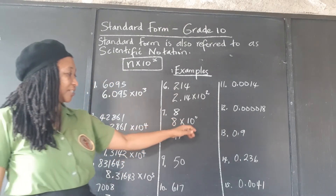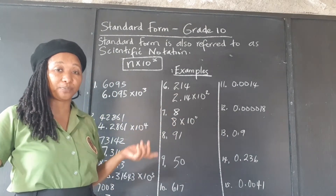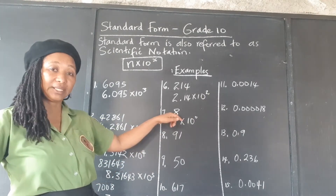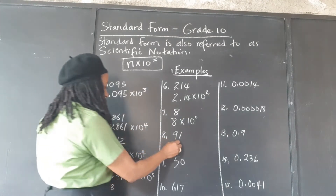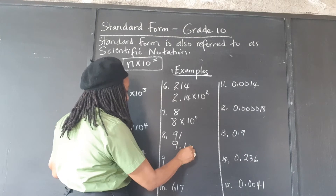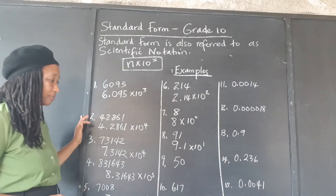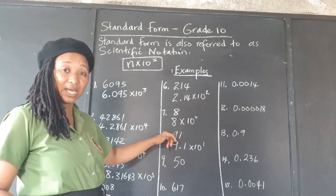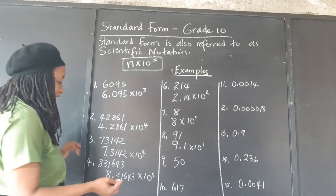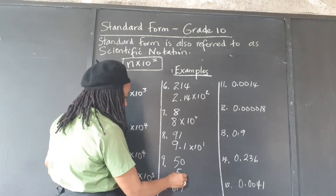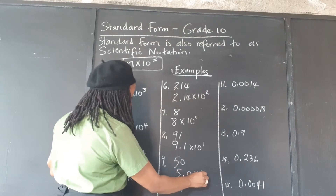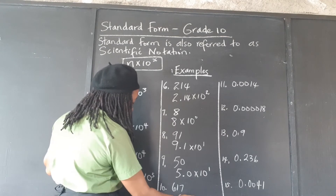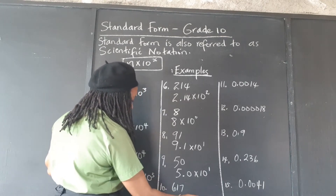And 8 would be 8 times 10 to the 0 power. Because remember, 10 to the 0 power is 1 — any number to the power of 0 is 1 — so this is 8 times 1. 91 is 9.1 times 10 to the first power; we'd have to move one place to the right for this to become 91 again. 50 would be 5.0 times 10 to the first power. 6.17 times 10 to the second power.